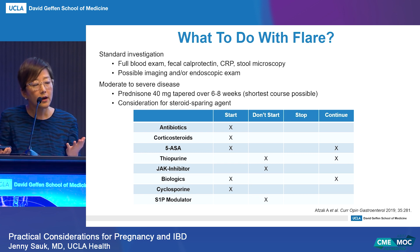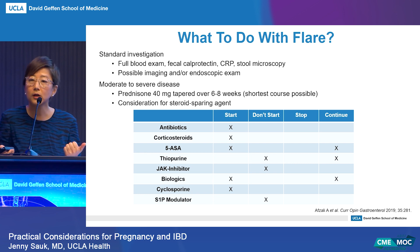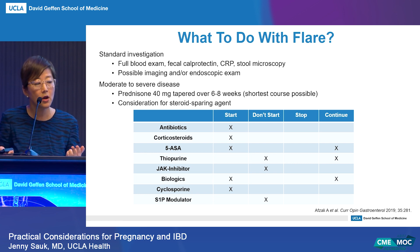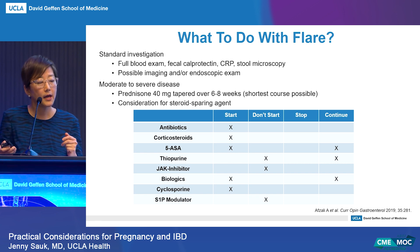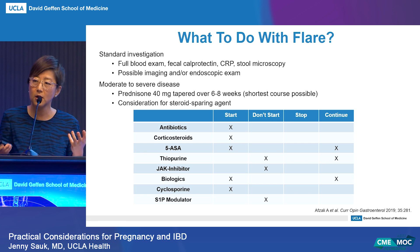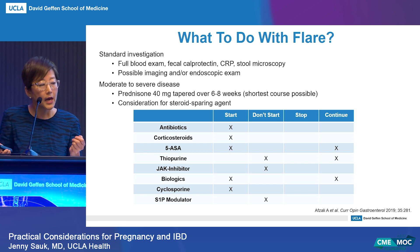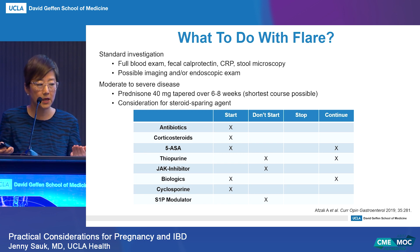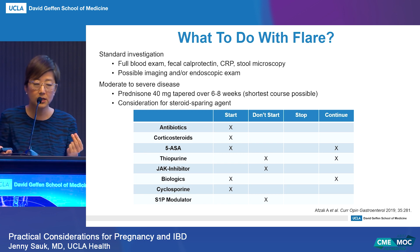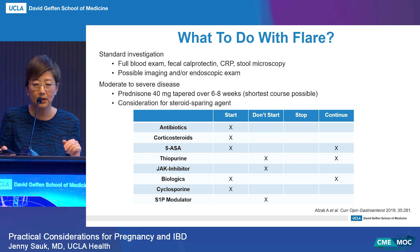What agents do we not start during a flare? We don't start thiopurines, JAK inhibitors, or S1P1 modulators. However, if patients are already on thiopurines, it's okay to continue. Biologic therapy can also be continued if already on it. Therapies that can be started to help control inflammation include antibiotics, corticosteroids with the shortest course possible, biologics if necessary, and there is limited data for cyclosporine.